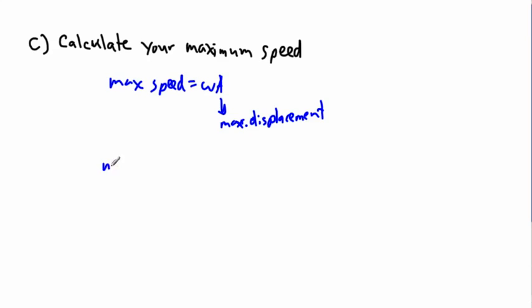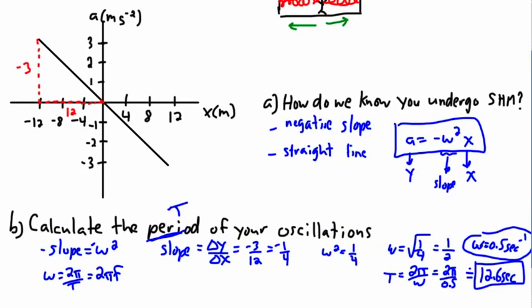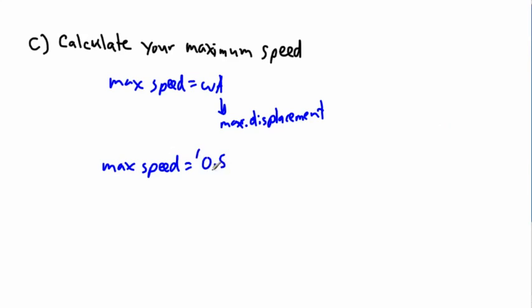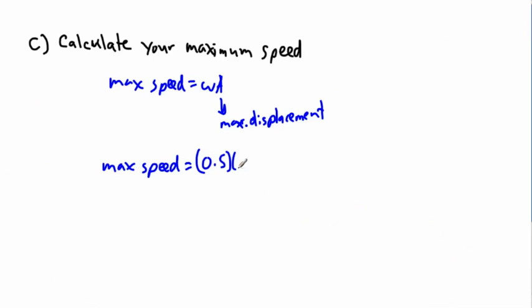So basically then all I need, I just need to know my a, because I know omega. Omega, we just found it back here. Omega was 0.5. So I know that omega here is 0.5. But I need to know my maximum displacement. And this graph tells me my maximum displacement. Look, my displacement, which is x here, it can go from 0 all the way up to a value of 12, or back again. Or you can say it goes from negative 12. So my maximum displacement here is actually 12. Because of that, I can say 12 times 0.5. And that means then that I have a value of 6 then. Because 12 times 0.5, that's equal to 6. So meters per second. So that's my maximum speed.